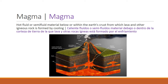Magma is hot fluid or semi-fluid material below or within the Earth's crust from which lava and other igneous rocks are formed by cooling. We can see a magma chamber example and how magma on the mantle flows upstream to eventually form lava. Importantly, magma is beneath the Earth's surface, while lava is what it's called once it reaches the surface.